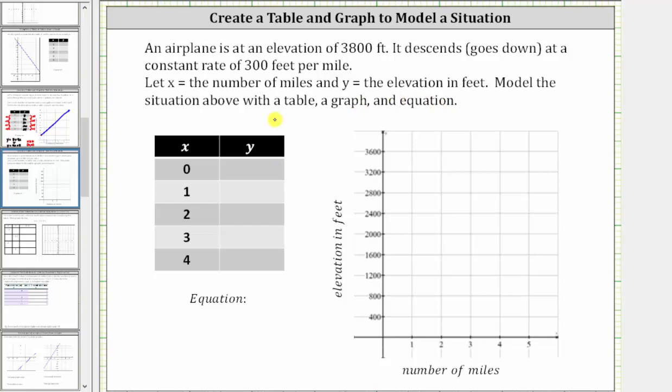Let's first complete the table. When x is zero, the number of miles is zero, and therefore y, the elevation, is the starting elevation of 3,800 feet, which means when x is zero, y is 3,800.